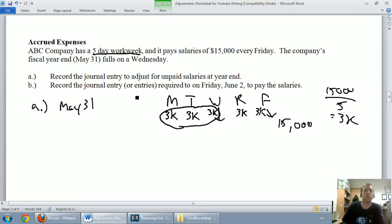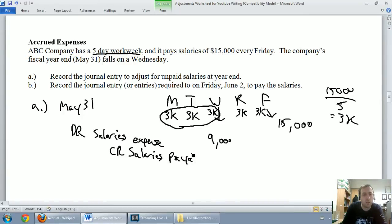Our journal entry here is pretty simple. What's the expense? It's a salaries expense, so we're going to debit salaries expense for $9,000. And we're going to credit, and this is a tricky one. It's always going to be a payable, and we want to do a payable related to expense, so often it's accounts payable, it might be interest payable. In this case, it's salaries payable, $9,000. So we've done our adjusting journal entry, debit salaries expense, credit salaries payable.